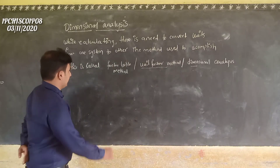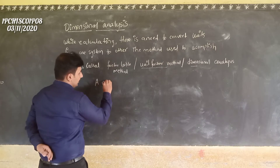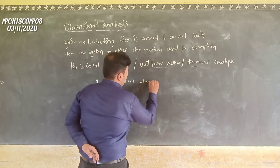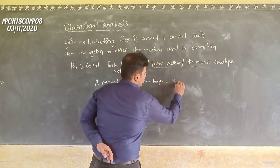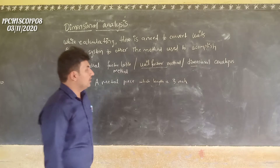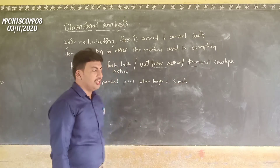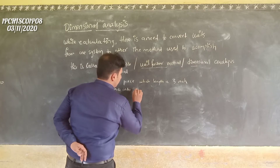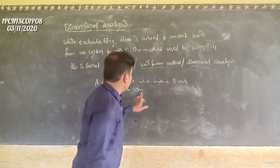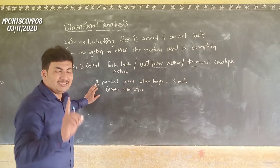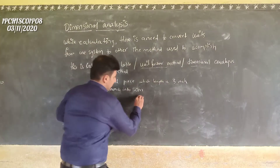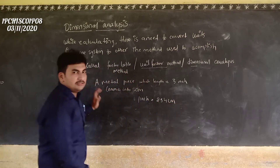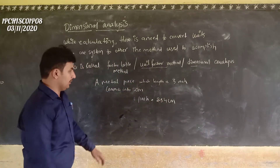Let us take one example. Convert a metal piece which has a length of 3 inches — given in inches — convert into centimetres. Before that, 1 inch is equal to 2.54 centimetres. This is the exact value.